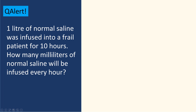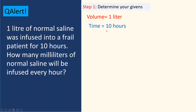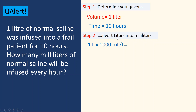Example: one liter of normal saline is infused into a patient over 10 hours. How many mLs of normal saline will be infused every hour? Step one: identify givens — volume is 1 liter, time is 10 hours. Step two: convert 1 liter to milliliters using dimensional analysis — 1 liter times 1000 milliliters per liter — liters cancel, giving 1000 milliliters.